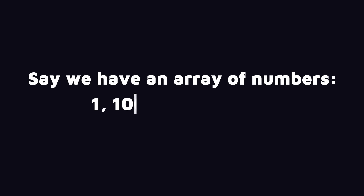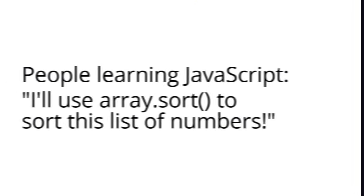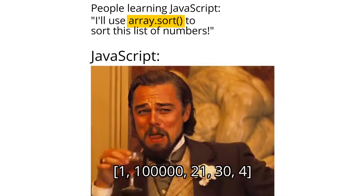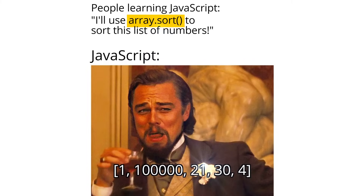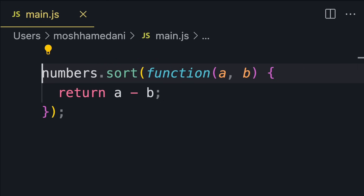Here's another funny one. Let's say we have an array of numbers like 1, 100,000, 21, 30 and 4. If we use array.sort to sort this array, we get the same result. Why? Because by default, the sort method sorts elements as if they were strings. To have JavaScript sort numbers correctly, we need to provide a compare function to the sort method.